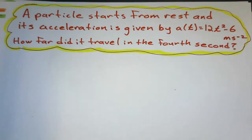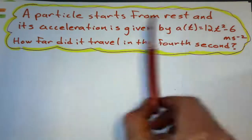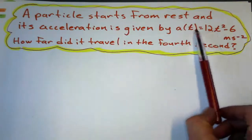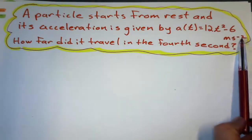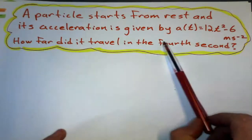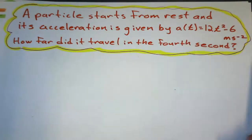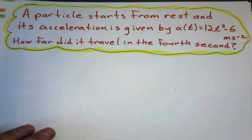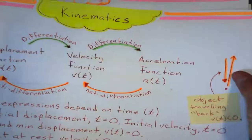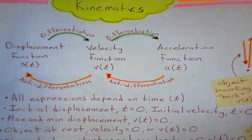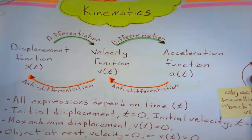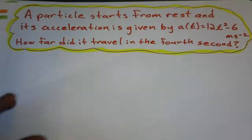Let's take a look at this one. A particle starts from rest and its acceleration is given by this formula here, in meters per second squared. How far did it travel in the fourth second? Let's read the problem carefully and see what we know about kinematics.